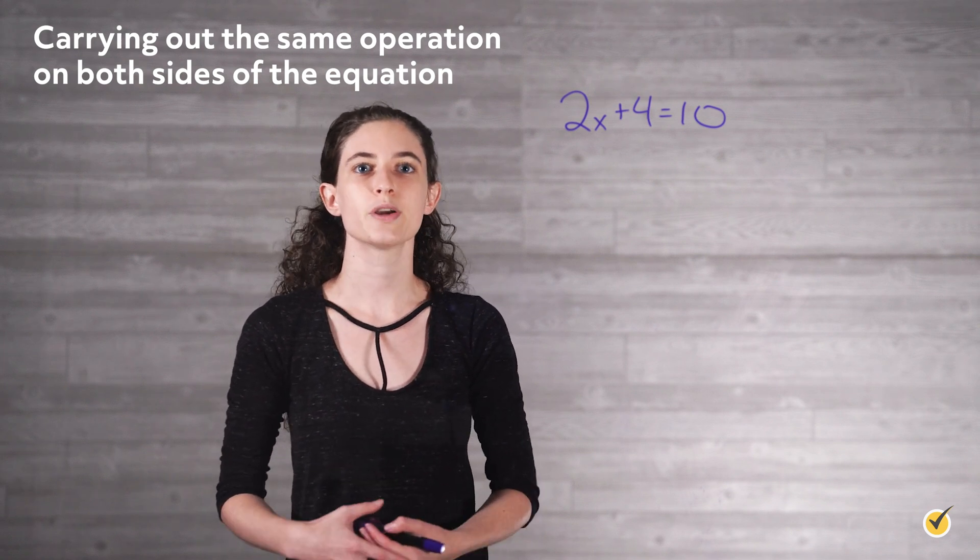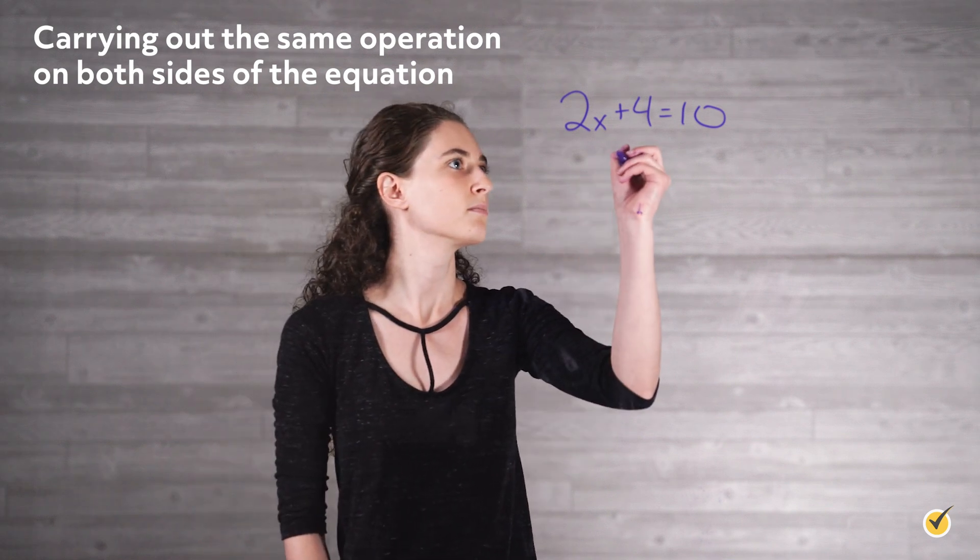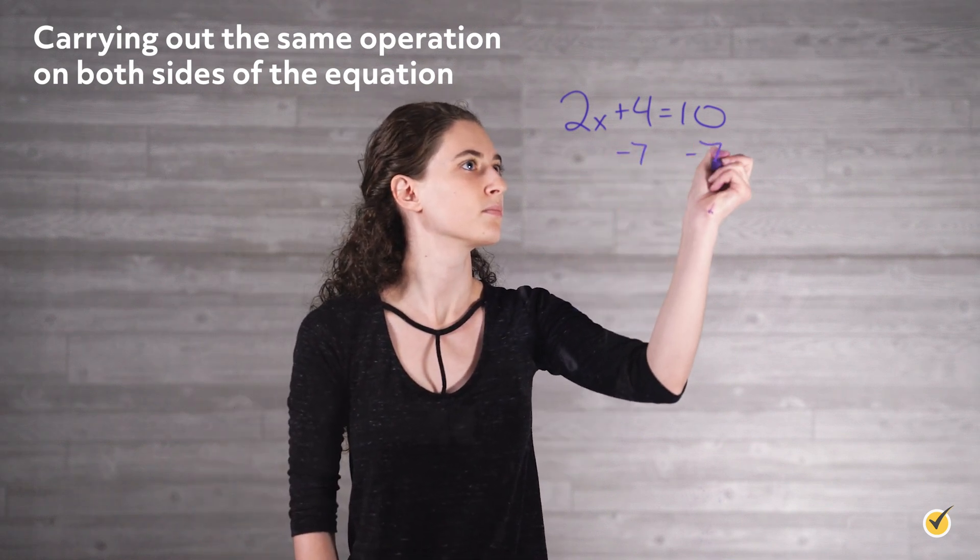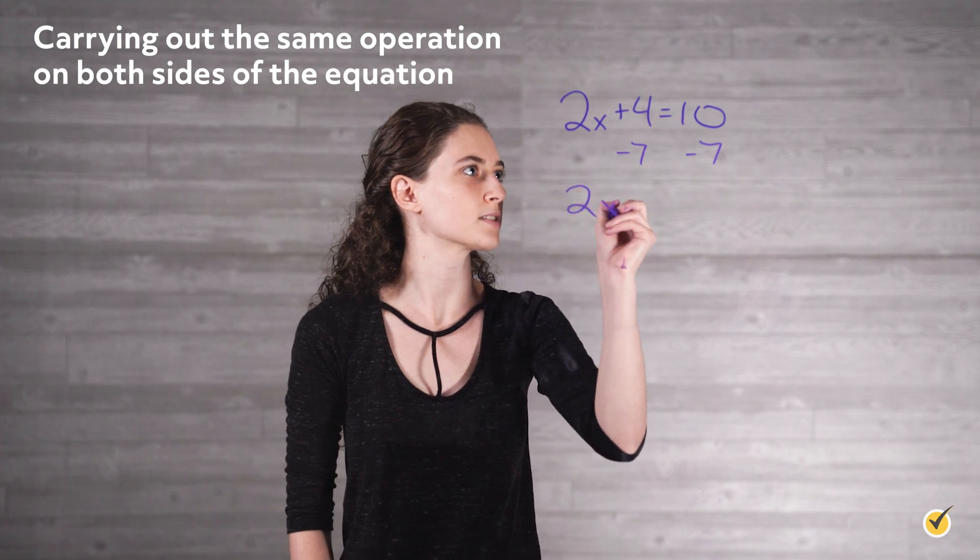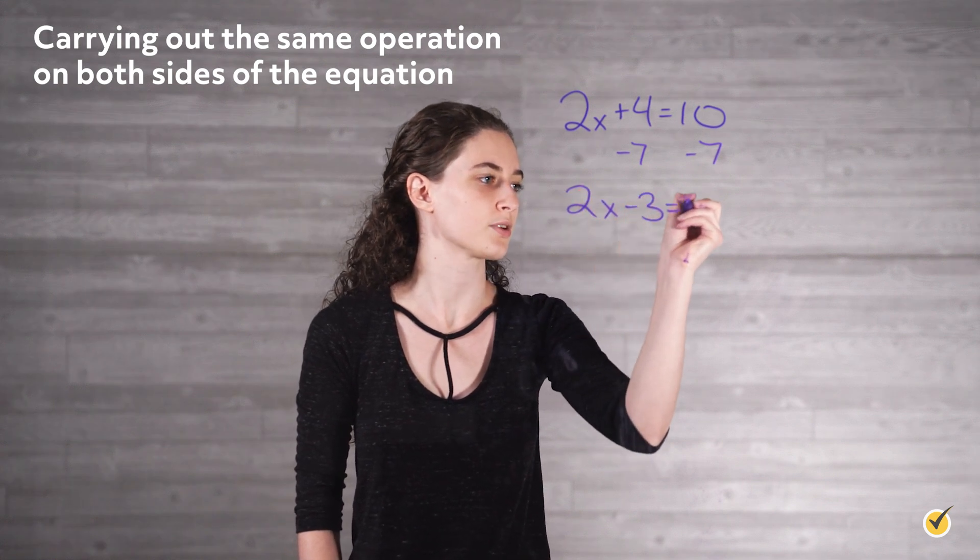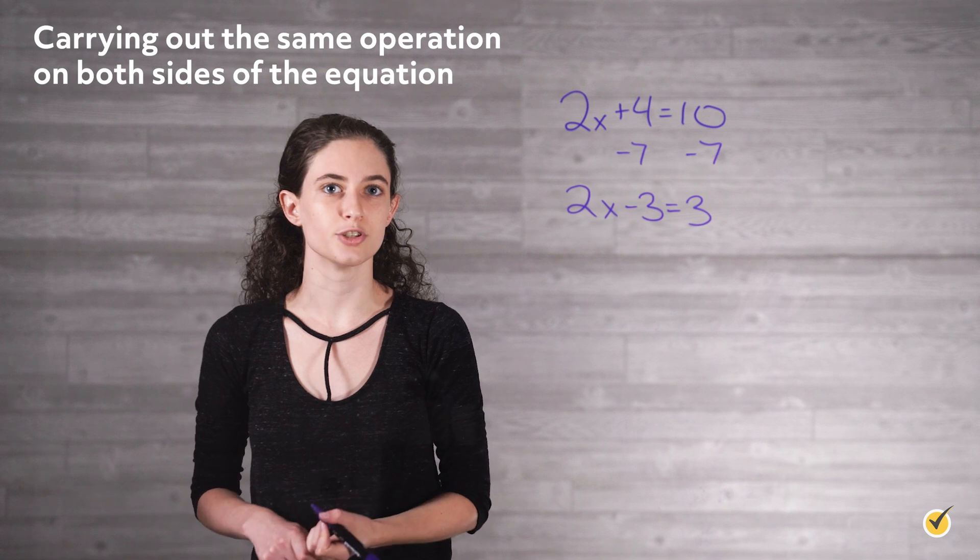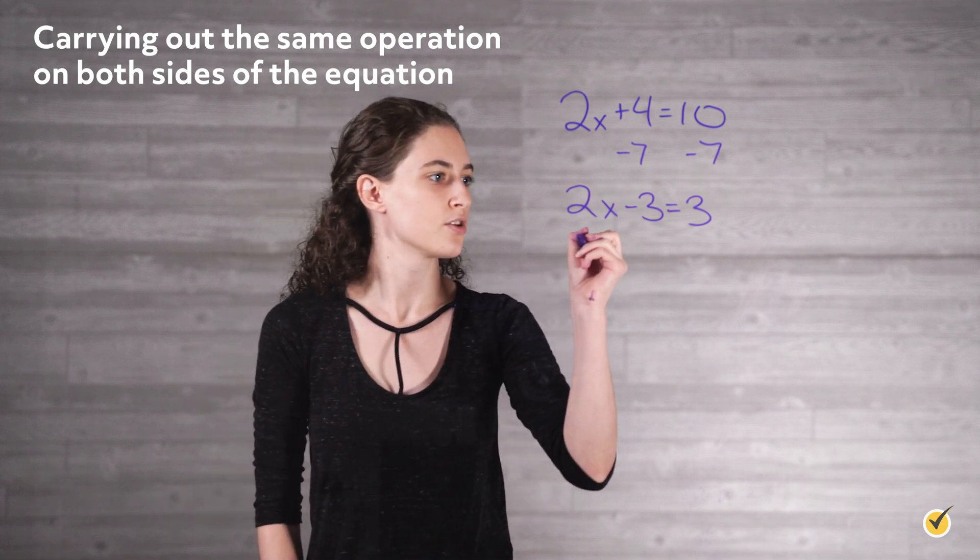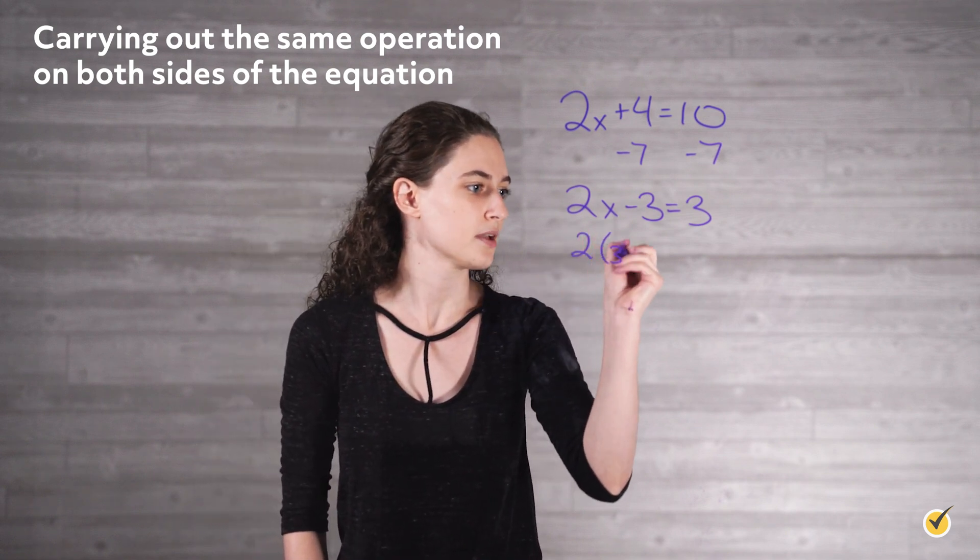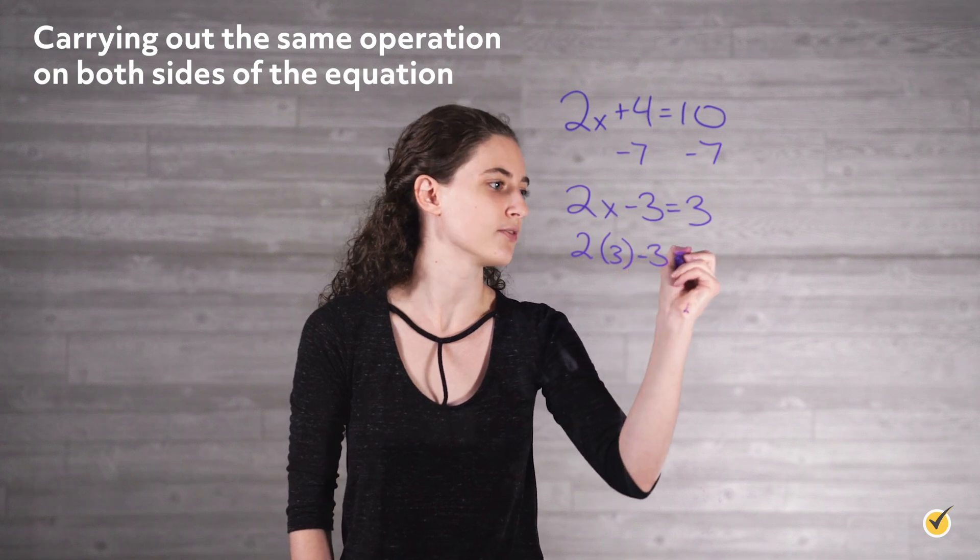For example, we can subtract 7 from both sides, which would give us 2x minus 3 equals 3. The statement is still true when x equals 3. 2 times 3 minus 3 does in fact equal 3.